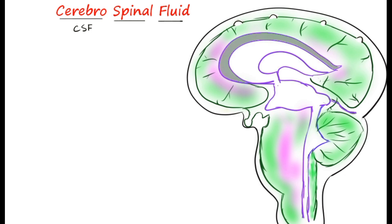We have cavities in the brain: the first and second lateral ventricles, the third ventricle, and the fourth ventricle. These are the cavities present in the brain itself, and the fourth ventricle is followed by the central canal of the spinal cord.